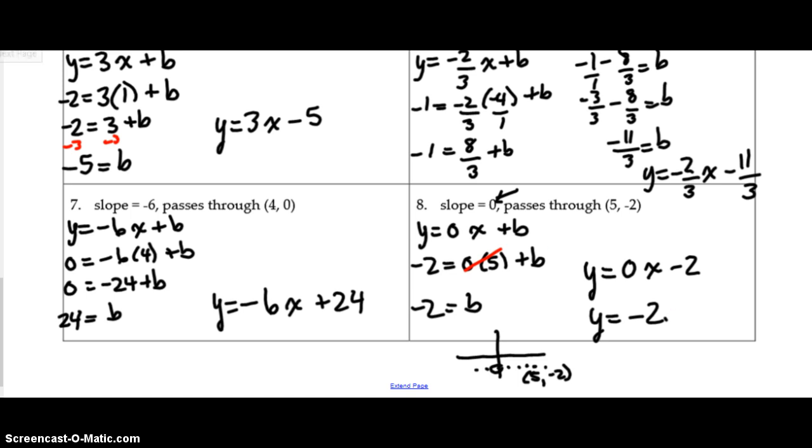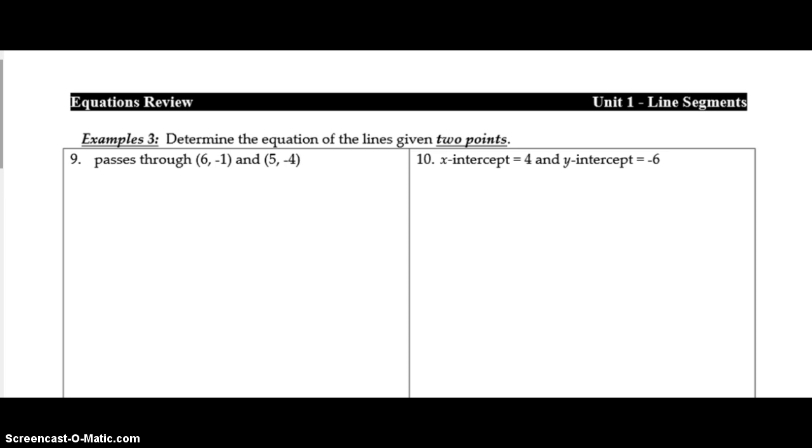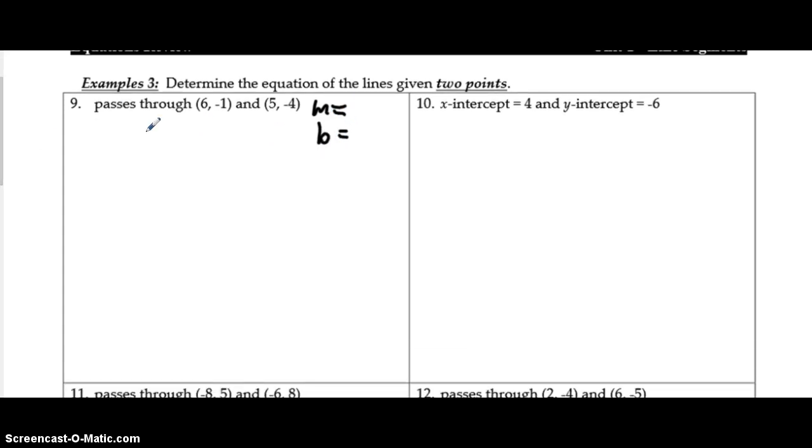All right, we've got two more questions to do as examples, and two more for you to try. So flipping to the next page. One step further, determine the equation of the lines given two points. So in this case, I don't know m, and I also don't know b. The first thing we're going to have to do here is go back to our review lesson from yesterday and calculate the slope of each line.